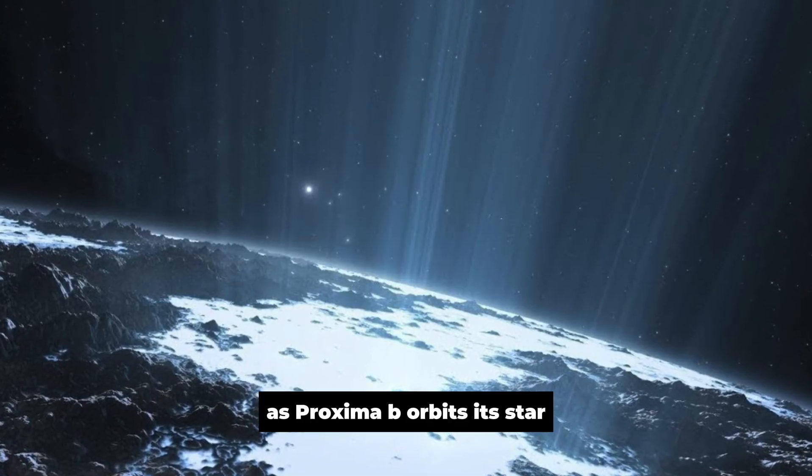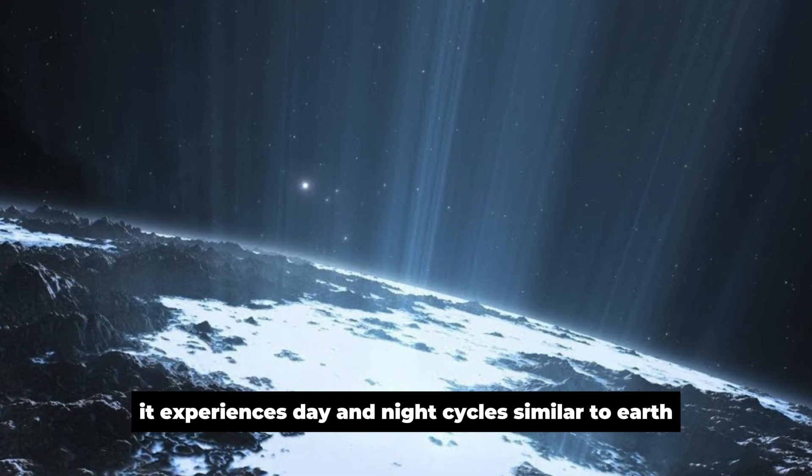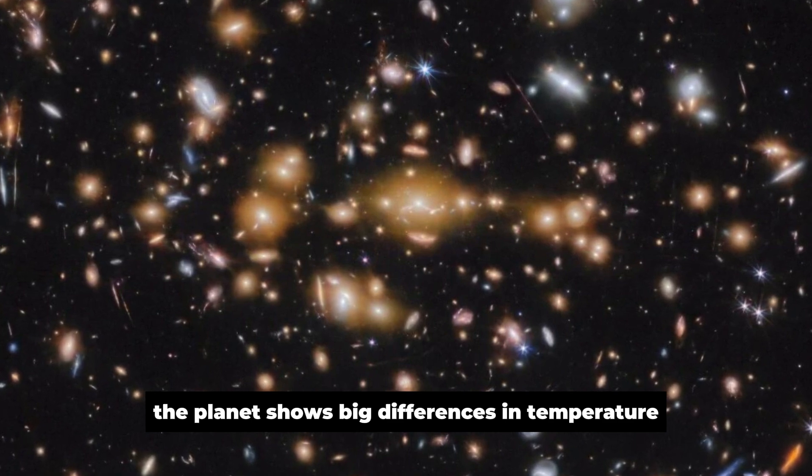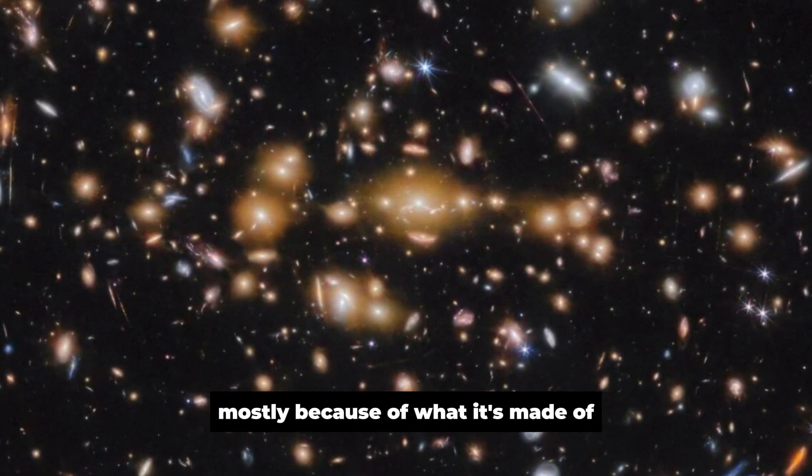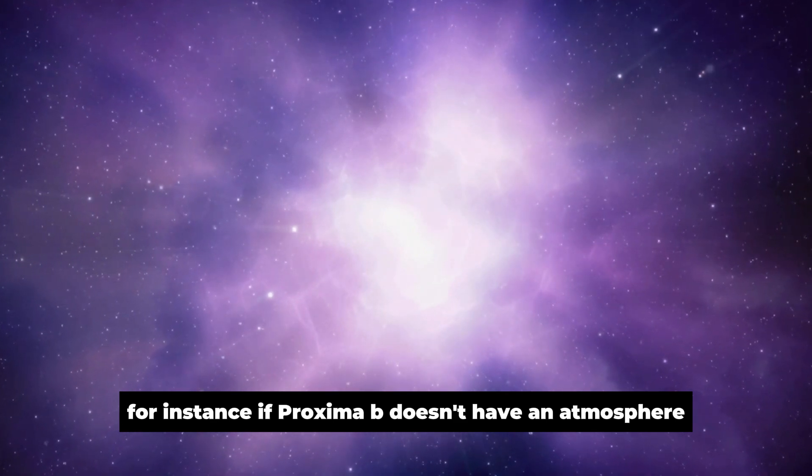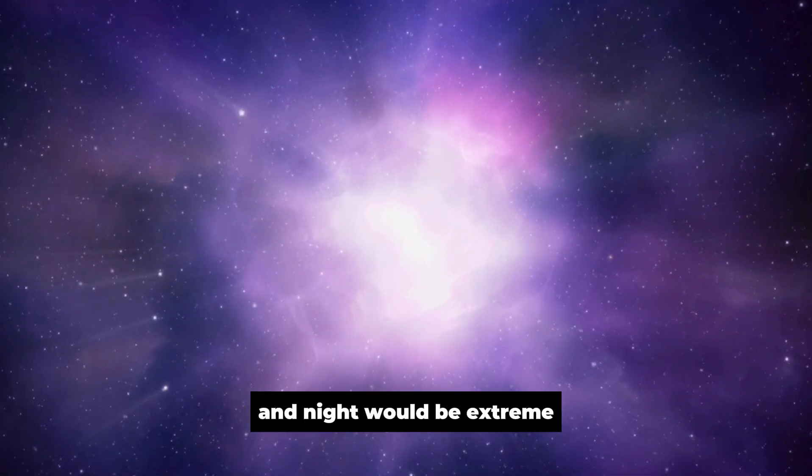As Proxima b orbits its star, it experiences day and night cycles similar to Earth, with hot days and cooler nights. The planet shows big differences in temperature, mostly because of what it's made of. For instance, if Proxima b doesn't have an atmosphere, the temperature difference between day and night would be extreme.